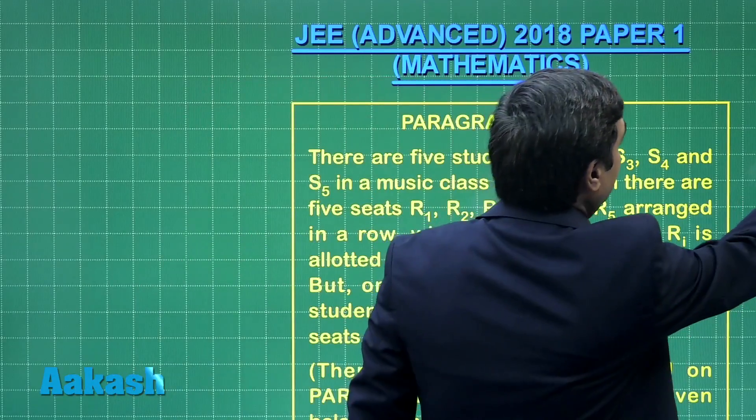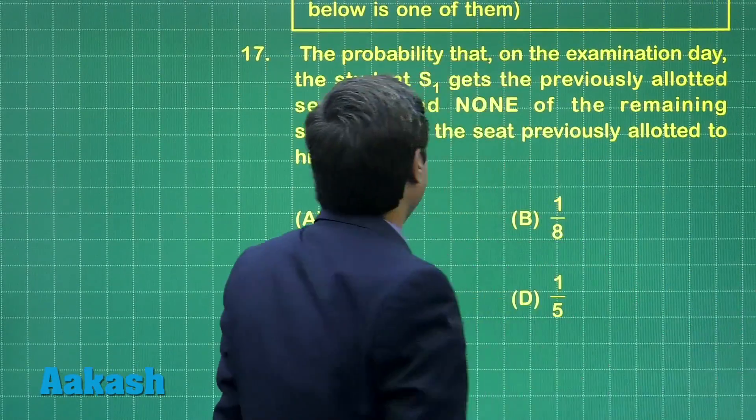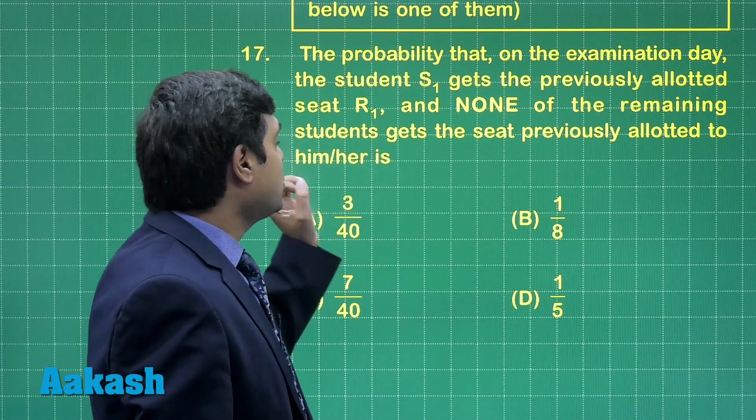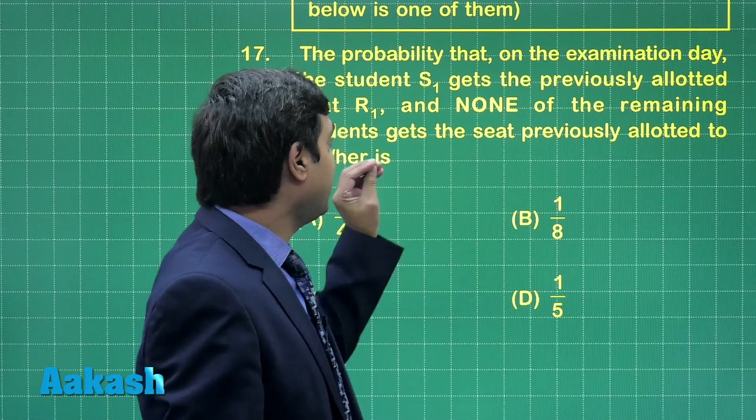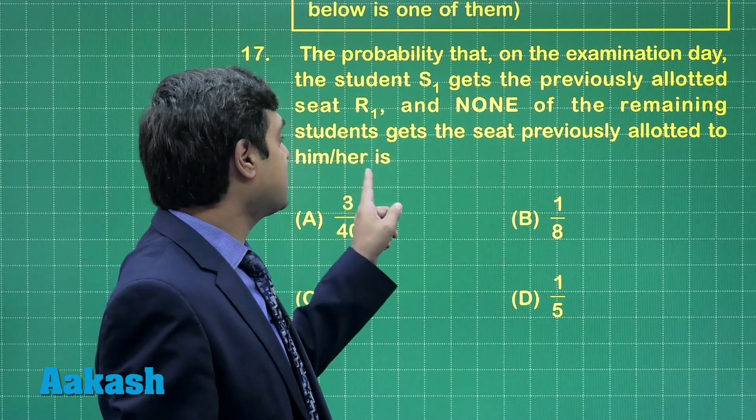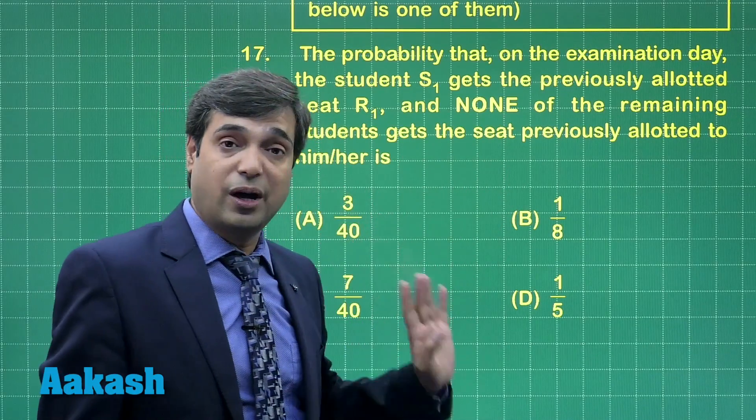Now, look at the questions based on this paragraph. Question number 17 says: the probability that on the examination day the student S1 gets the previously allotted seat R1 and none of the remaining students gets the seat previously allotted to his or her.